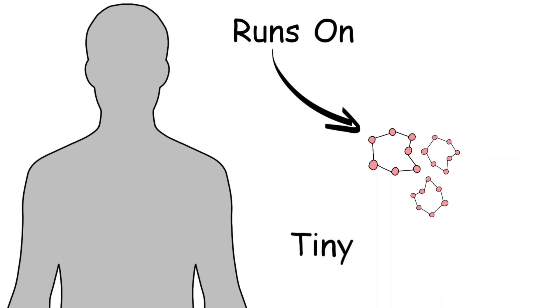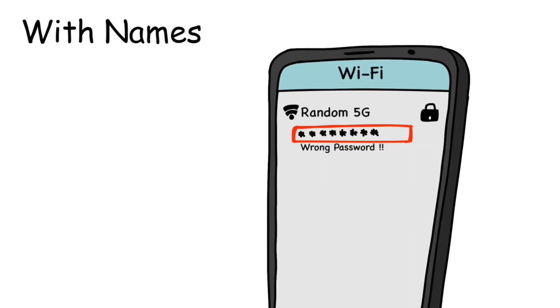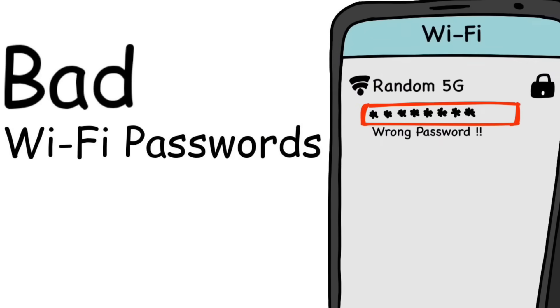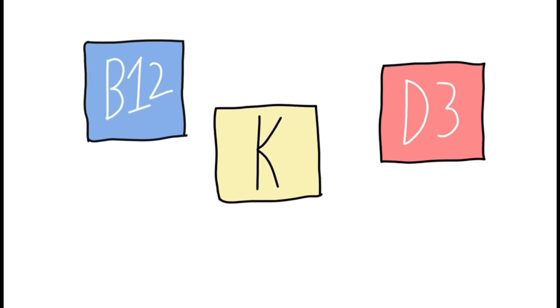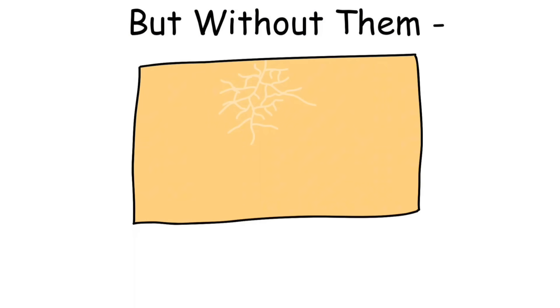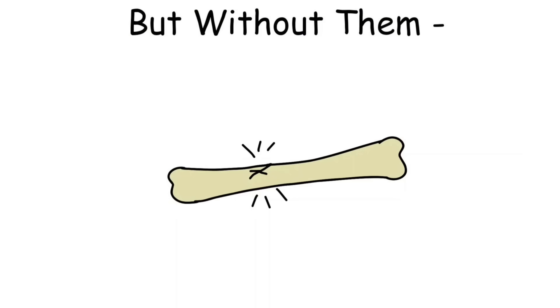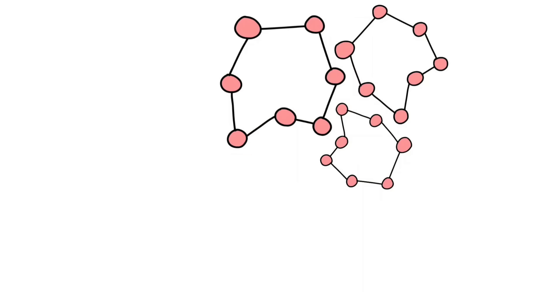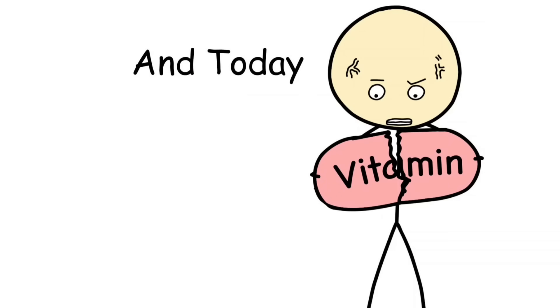If I told you your body runs on tiny invisible chemicals with names that sound like bad Wi-Fi passwords - B12, K, D3 - you might laugh. But without them, your skin cracks, your blood thins, your bones snap, and your brain misfires. These microscopic players, they're vitamins. And today, we're breaking down every single one you actually need.